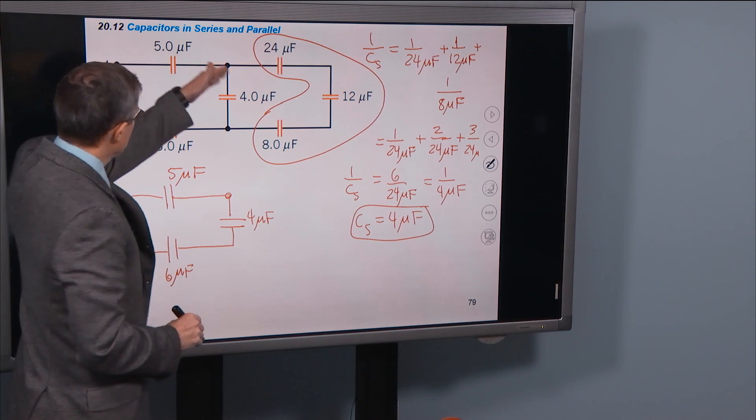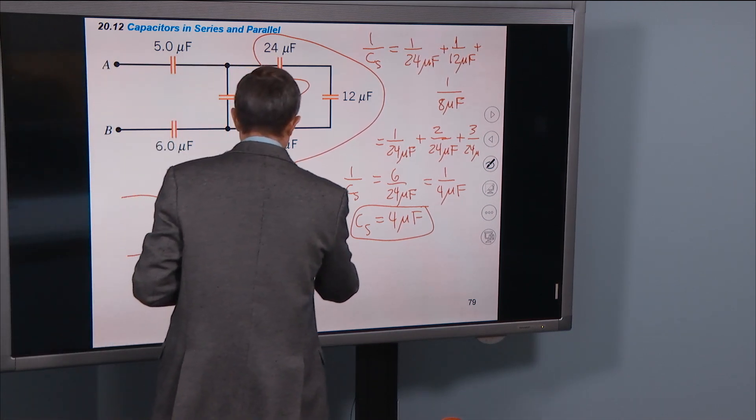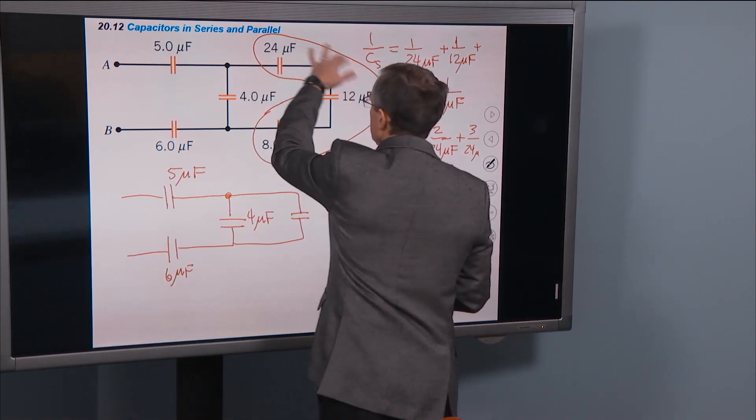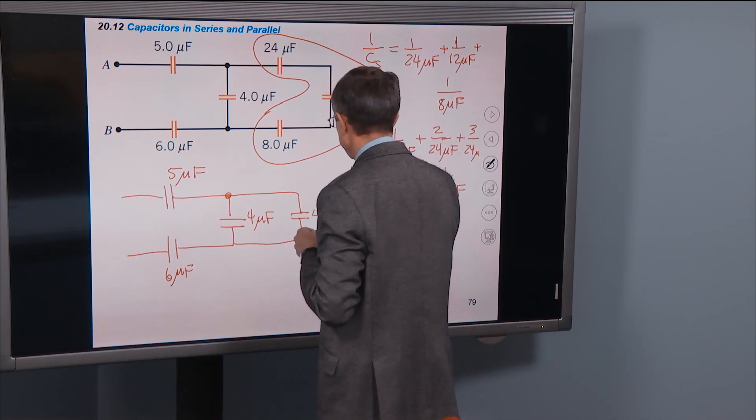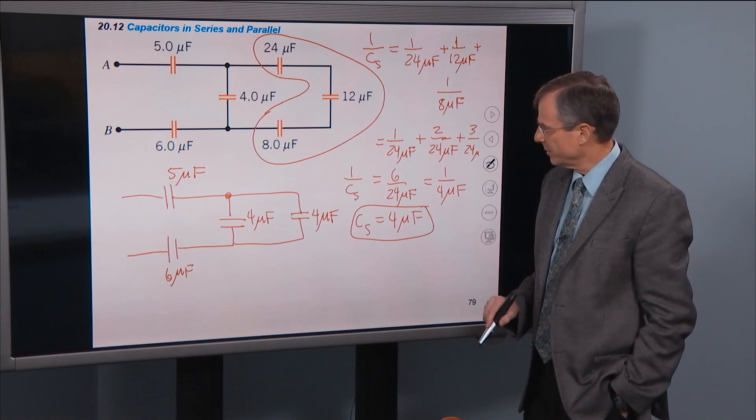So that gives us the equivalent capacitance for these three of 4 microfarads. So I've just copied these three capacitors from this diagram, and now I'm replacing these three that I circled over here with the equivalent capacitance of 4 microfarads. Well I think you can see how to proceed from here.